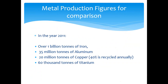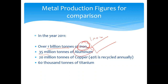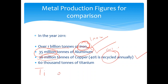Metal production figures for comparison in the year 2011: over 1 billion tons of iron, 35 million tons of aluminum — because it's inexpensive to produce and found everywhere — and 20 million tons of copper, of which 40% is recycled annually. Recycling plays an important role in our economy. And 60,000 tons of titanium. Titanium is actually more abundant than copper, but its production is very costly, which is why only 60,000 tons are produced annually.